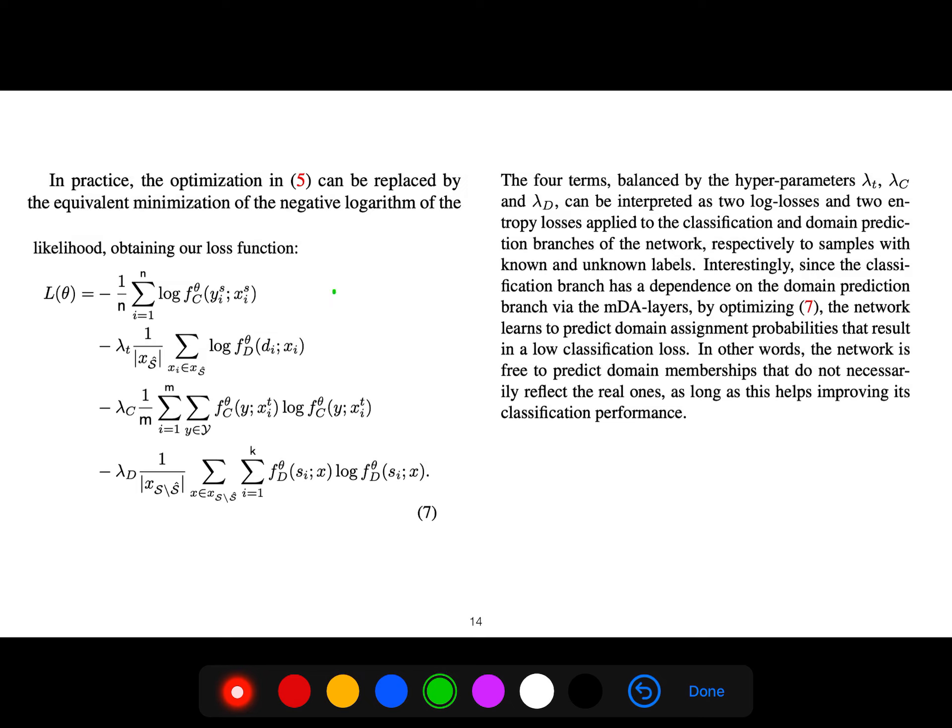So these four terms—one, two, three, four—can be interpreted as two log losses and two entropy losses. So these are two log losses, these are two entropy losses: entropy loss, entropy loss, log loss.